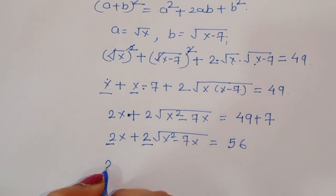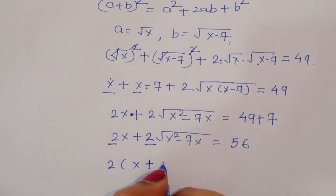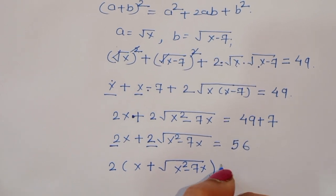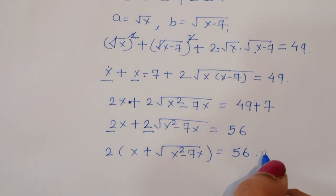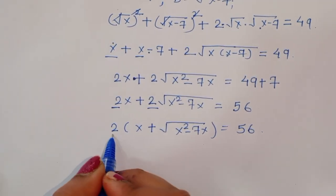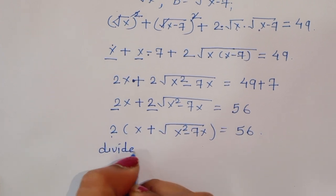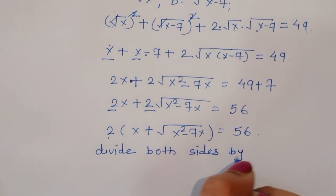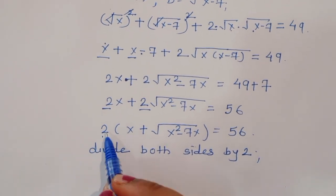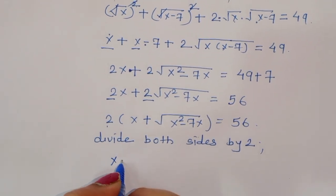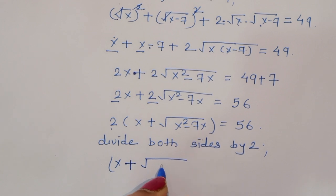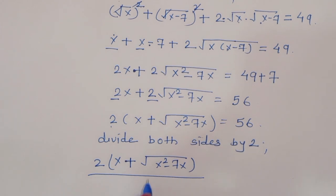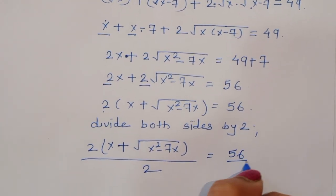So we can take 2 common here: 2 times x plus square root of x squared minus 7x is equal to 56. Now we can divide both sides by 2, because we have to remove this 2. Dividing both sides by 2, the 2 cancels.